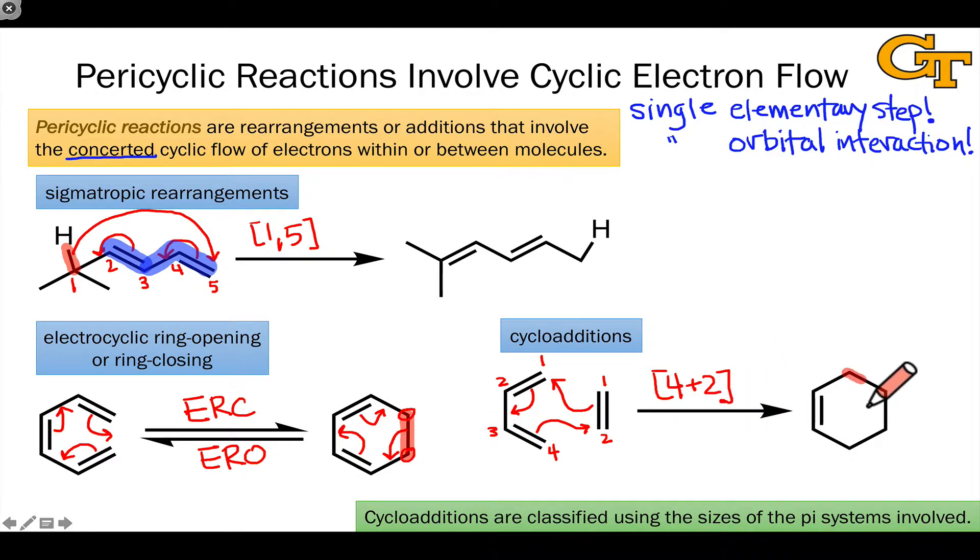This reaction forms two new sigma bonds here and here, and the double bonds shift. Notice that two of the pi bonds now have been converted into these two new sigma bonds while one of them has gone into this new pi bond in the product.